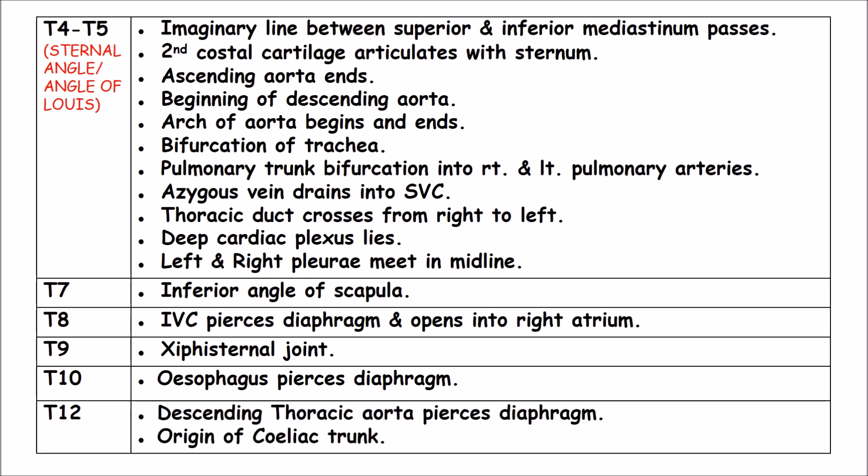T12: The descending thoracic aorta pierces the diaphragm. This is also the origin of the celiac trunk.